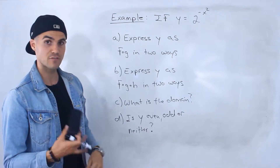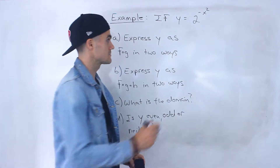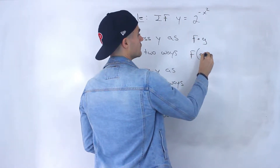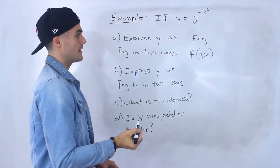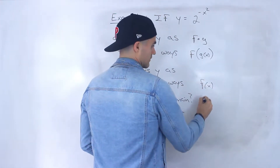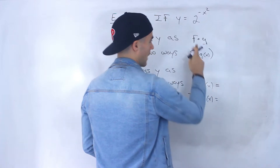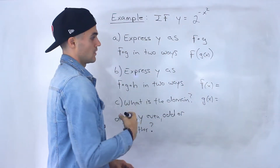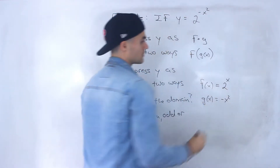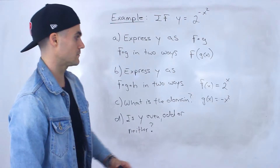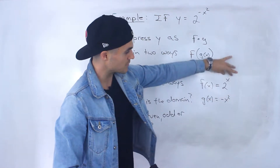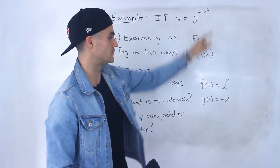So part A, we've got to express y as f of g in two different ways. So remember, f of g is f of g of x. So how can we express f of x and g of x? So f of g of x ends up giving us this. A simple way is we could let g of x be negative x squared, and then f of x would be 2 to the power of x. So that's one way, because then f of g of x would be f of negative x squared. We would plug in this expression for this x value, and we would end up with that right there.